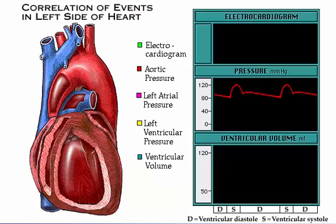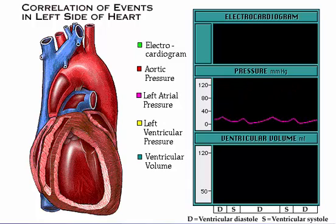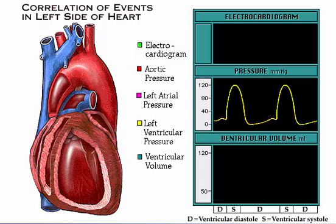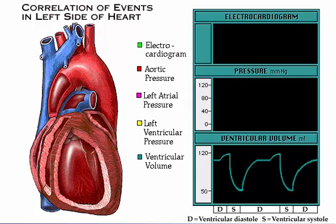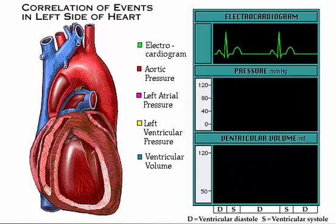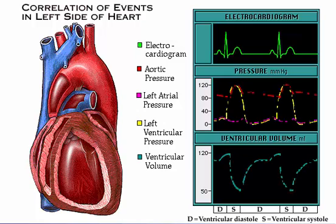Over the next few pages, you'll see animated graphs showing aortic pressure, atrial pressure, ventricular pressure, ventricular volume, and an ECG wave tracing. This series ends by showing all the graphs together.